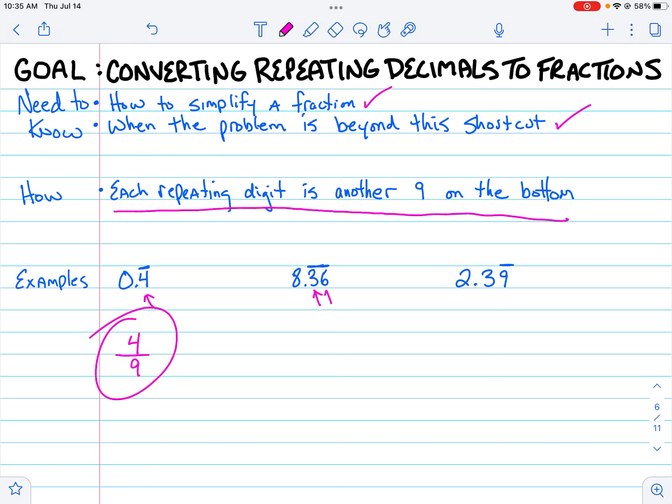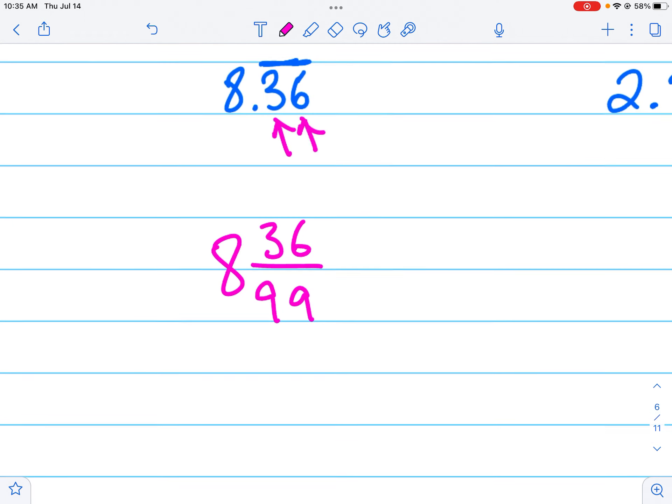Here's the second one. I have two repeating digits so that gives me two 9s in the bottom. I'm gonna go ahead and put the 36 on the top and let's not forget the 8. Now if I need to simplify and I think this one I will, then yes, you still have to simplify because that's always part of the deal.